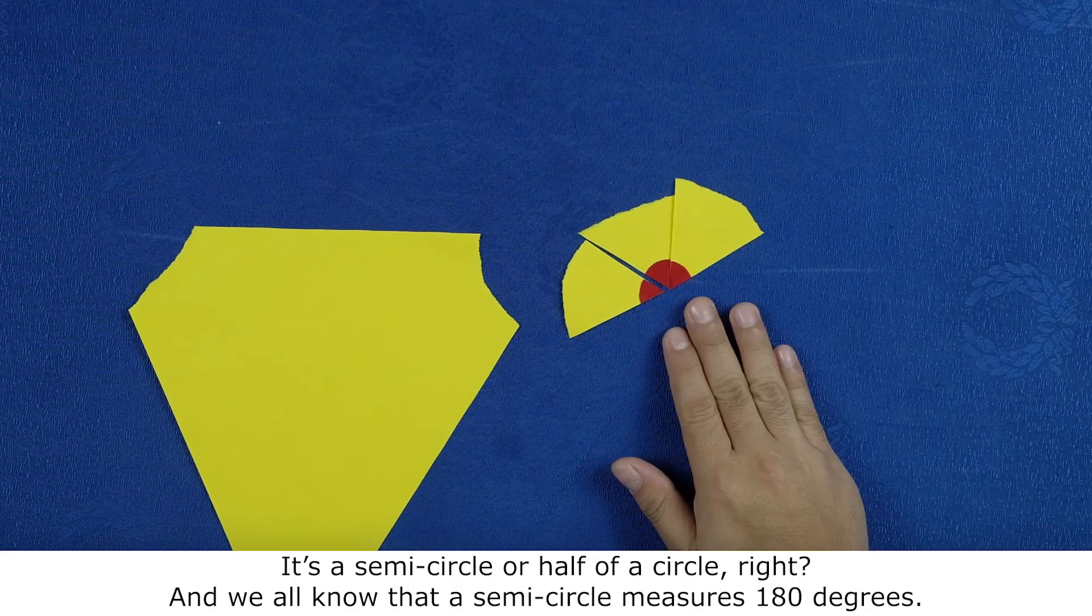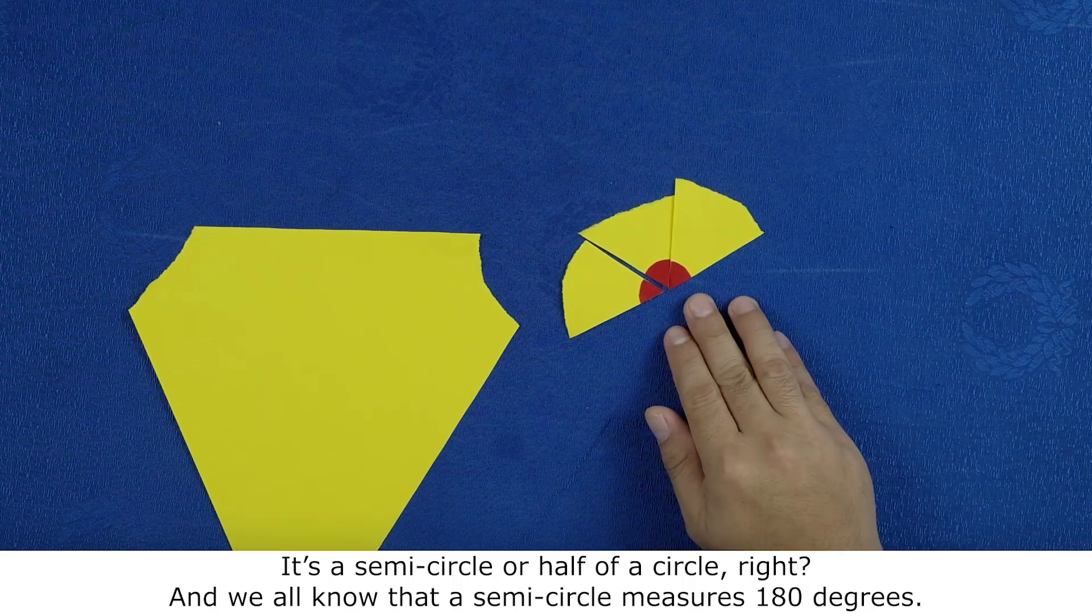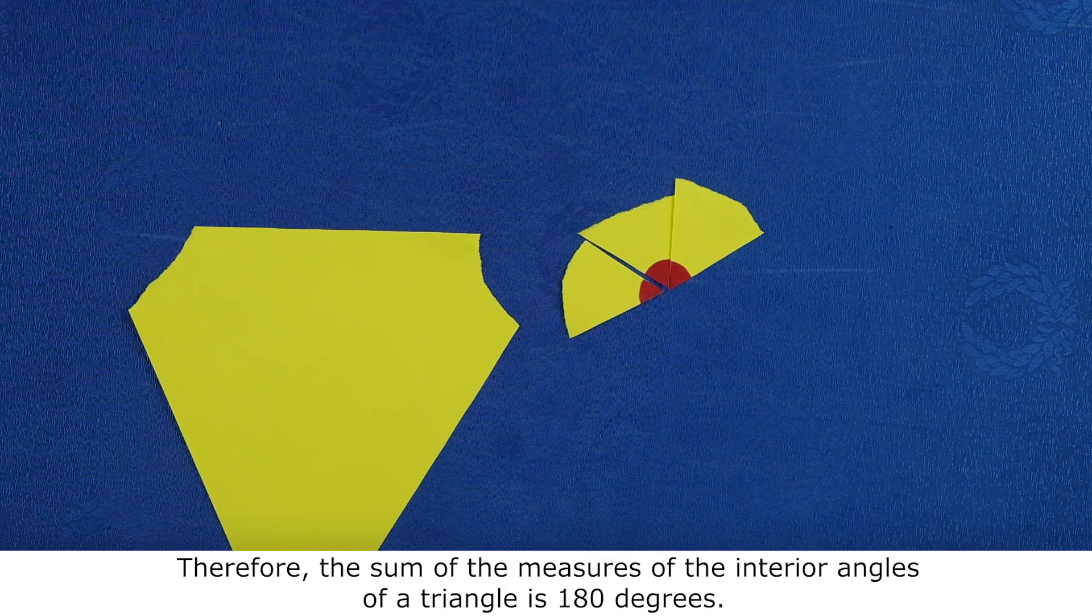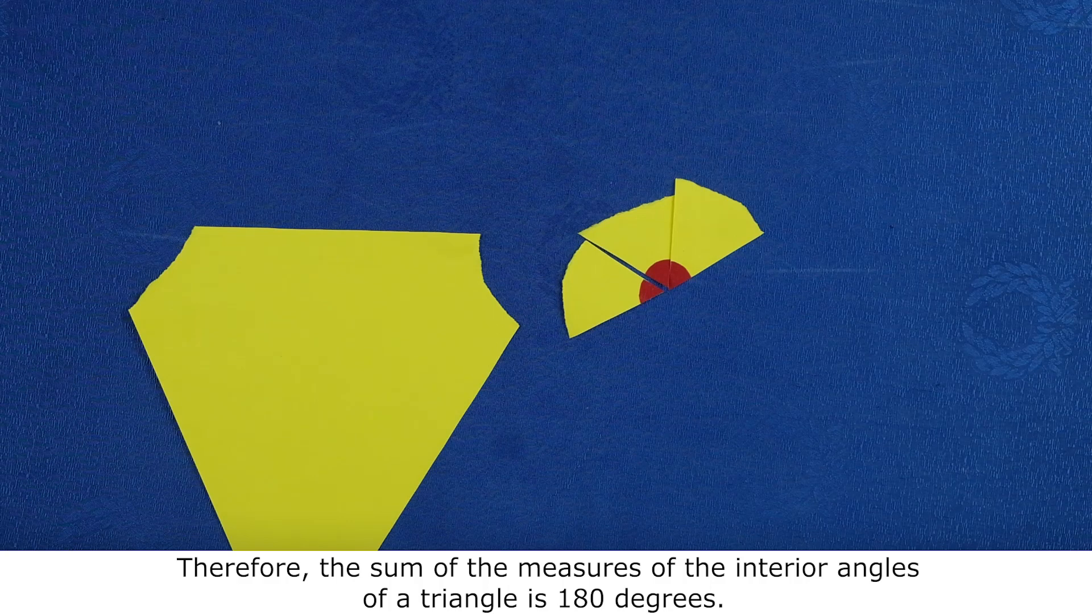And we all know that a semicircle measures 180 degrees. Therefore, the sum of the measures of the interior angles of a triangle is 180 degrees.